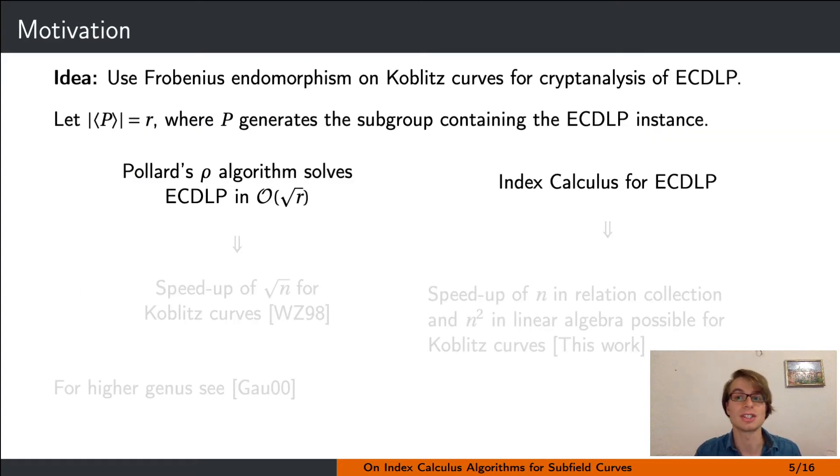There are different strategies to attack the elliptic curve discrete logarithm problem when well-chosen parameters are used. The most successful is still the use of generic algorithms such as Pollard's rho. The curve and ECDLP parameters are usually chosen such that the cardinality of the subgroup is of large prime order r. Pollard's rho algorithm then runs roughly in time square root of r.